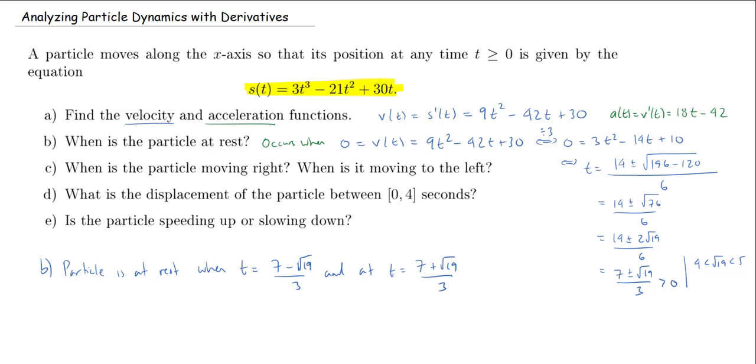Moving on, when is the particle moving to the right? So since we're moving along the x-axis, the particle is going to be moving to the right when the velocity is positive. If v is positive, that means that the position is increasing. That means that the x-coordinate is increasing. So when is it moving to the right? Moving right when the velocity is positive.